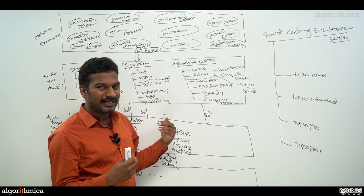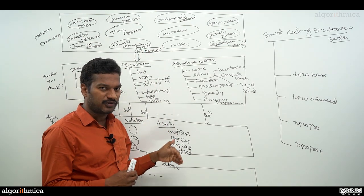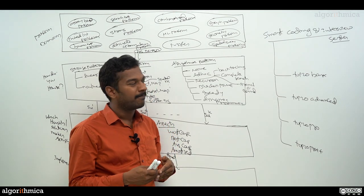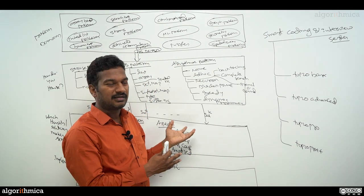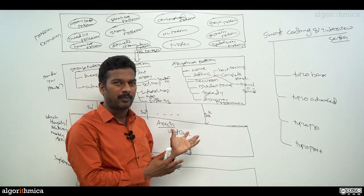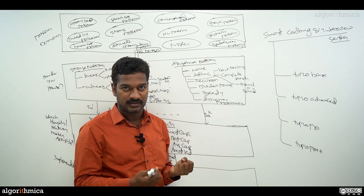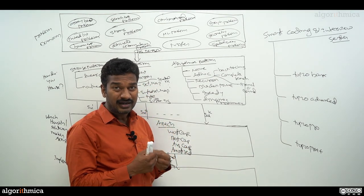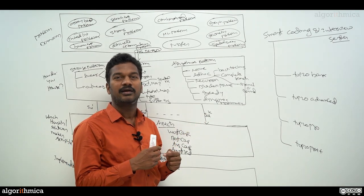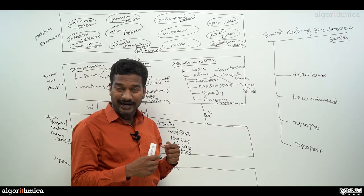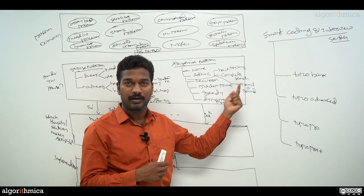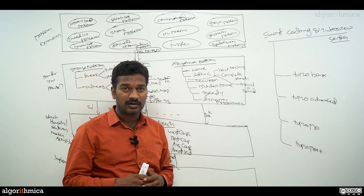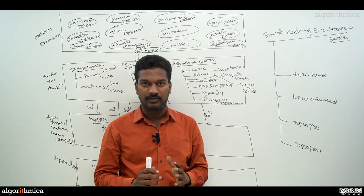Now we want to see what this four-stage framework means with a concrete example to really understand whether it is a complicated or a very natural process. We'll pick up one small problem and understand this framework, then adapt it for every program we are going to take under this series.